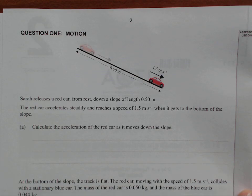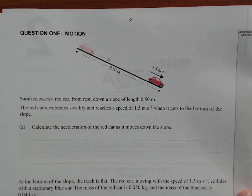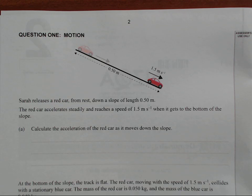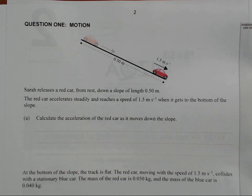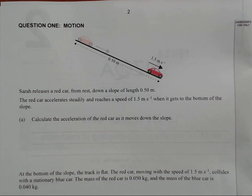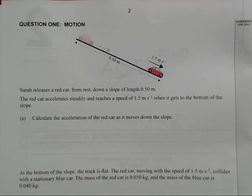Question 1. Sarah releases a red car from rest down a slope of 0.5 meters. The red car accelerates steadily and reaches a speed of 1.5 meters per second when it gets to the bottom of the slope. Calculate the acceleration of the red car as it moves down the slope.